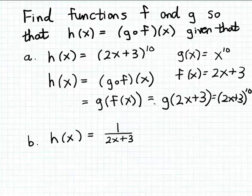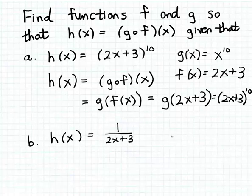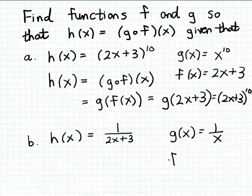Let's try that process again. In part b, h of x is 1 over 2x plus 3. Again, I want to find two functions g and f so that when I calculate g compose f of x, I'll get 1 over 2x plus 3. I'm going to take g of x to be 1 over x, since the formula for h involves taking the reciprocal of a quantity. And I'll let f of x be 2x plus 3, this linear function.